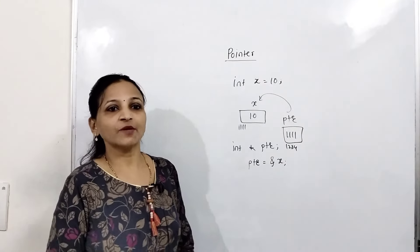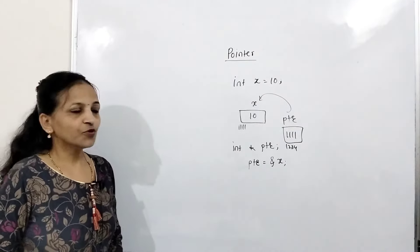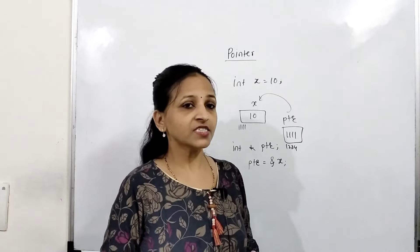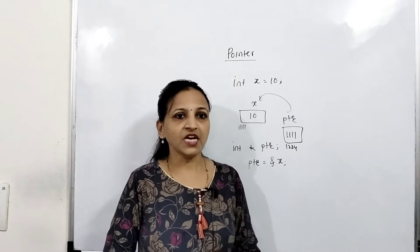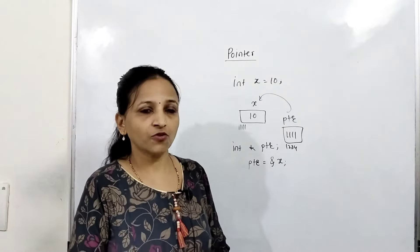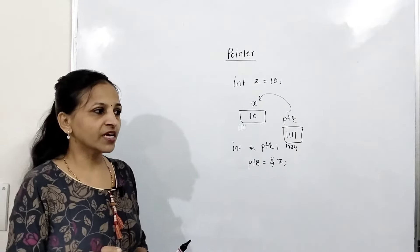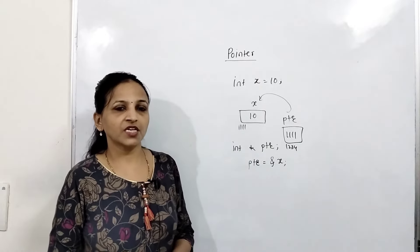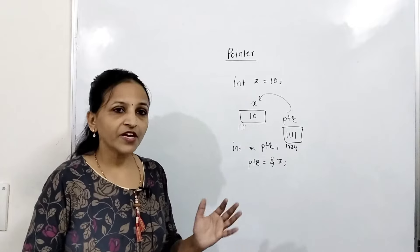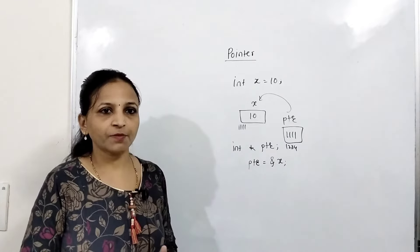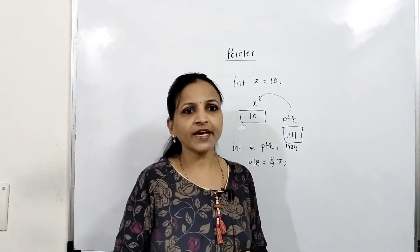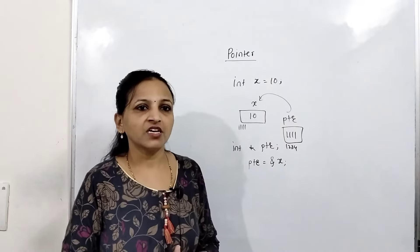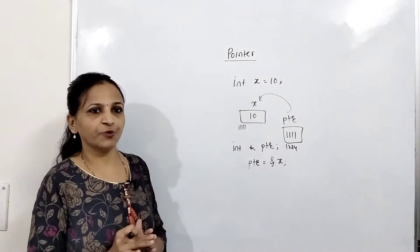Hello students, today I am going to explain pointers in C language. Whenever we write a program, we declare variables. The purpose of declaring variables is storage. For example, if we need to add two numbers, we declare two variables of integer type or float type. A variable is nothing but a name given to a memory location whose value can be modified during execution of a program.